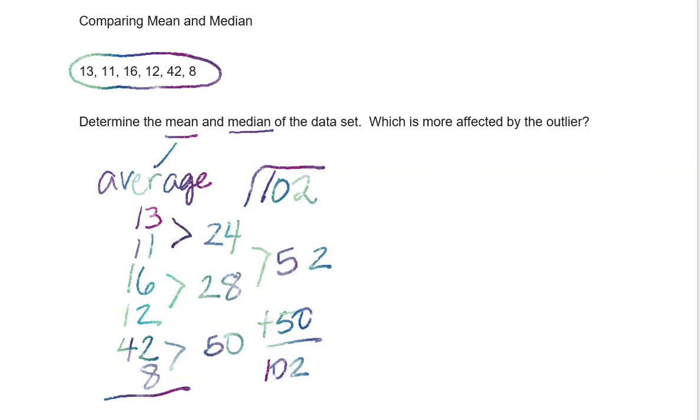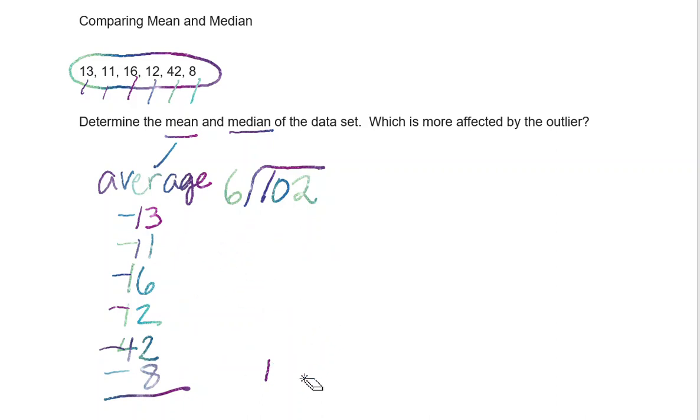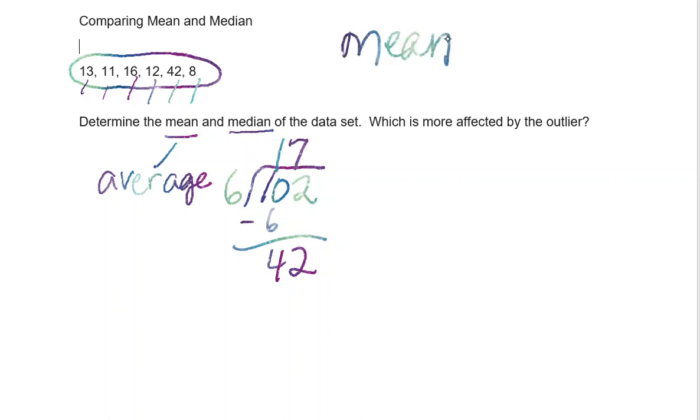Then I'm gonna divide that sum by the number of numbers that I added up. So we have 1, 2, 3, 4, 5, 6 numbers in this data set. So 102 divided by 6 would allow me to find the mean, otherwise known as the average. 6 goes into 10 one time and 6 goes into 42 seven times. So the mean is equal to 17.